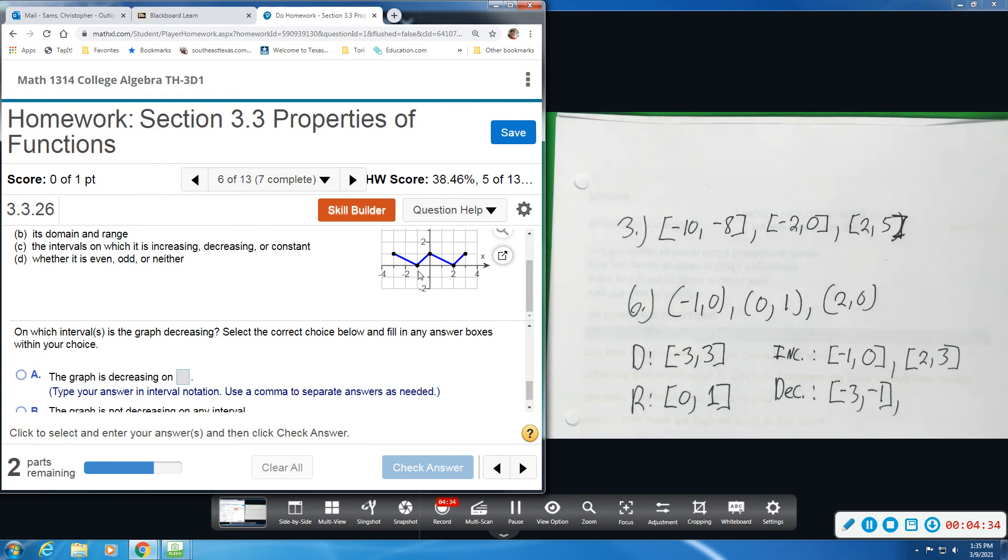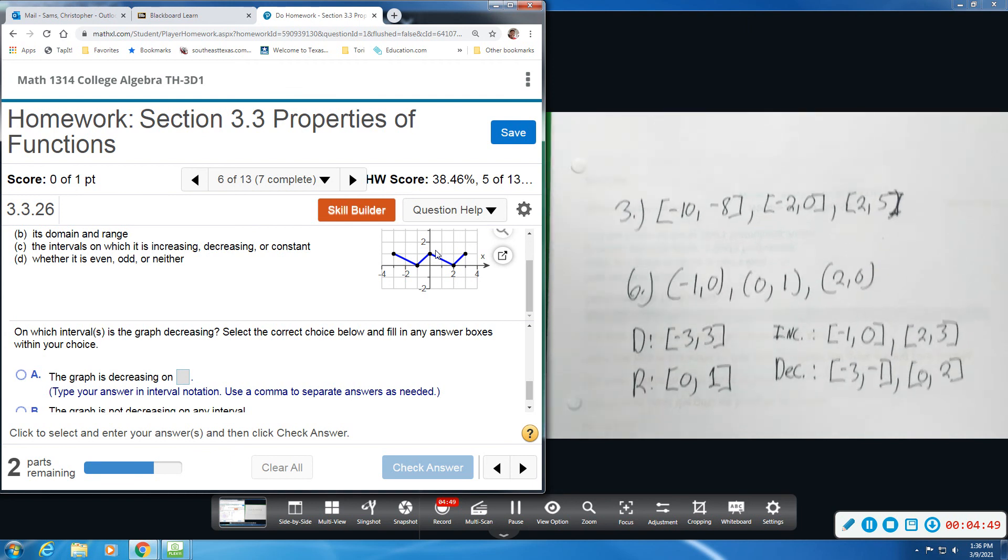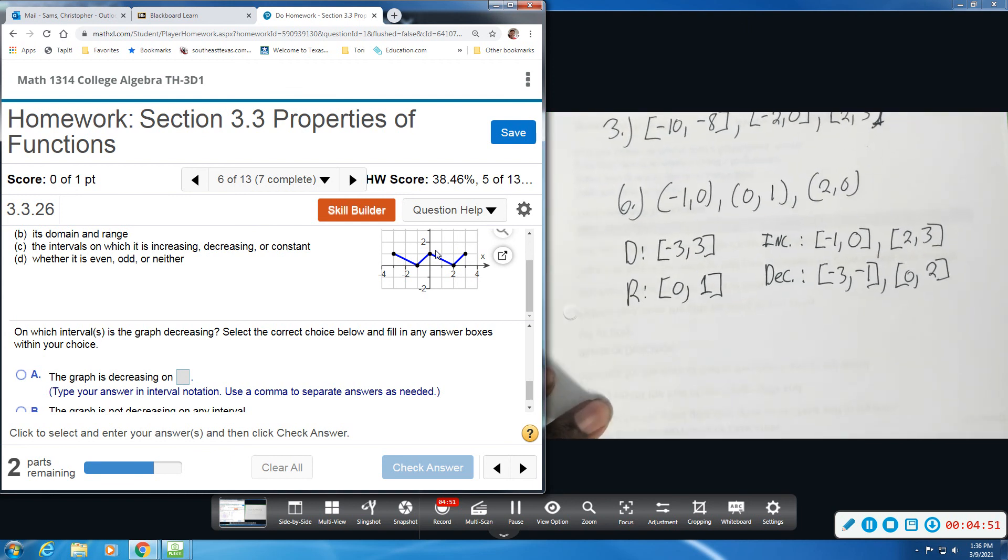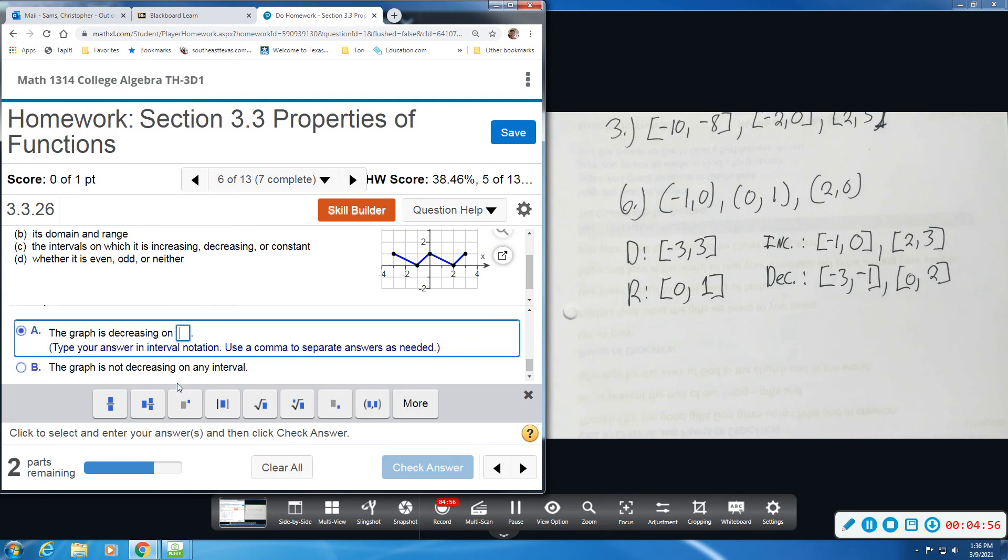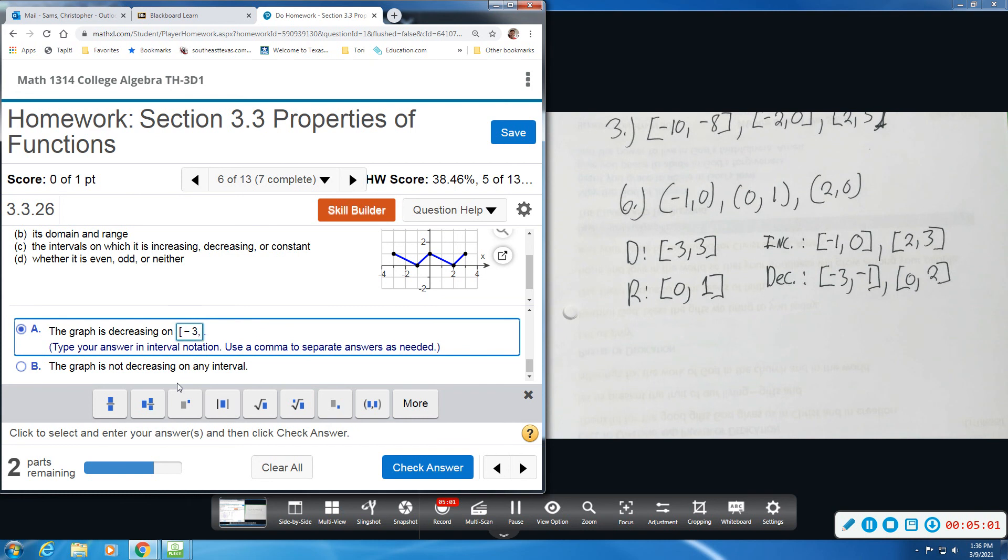And then there is another portion of this graph that's decreasing, starting at x-value of zero until we get to an x-value of two. So decreasing from zero to two as we read left to right. Negative three to negative one, and then zero to two.